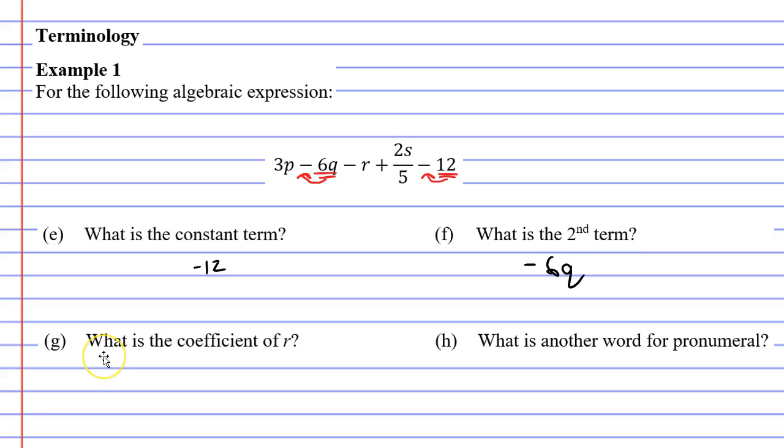Question G now is asking us, what is the coefficient of r? So if we highlight r in green, there is no number in front of it. And we are told that if there is no number, then technically it's the number 1. So the coefficient of r is a 1 with a negative as well. So we need to write negative 1.